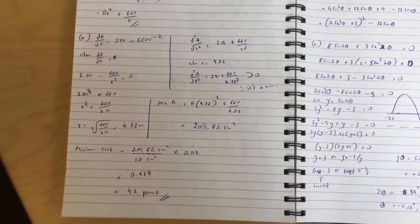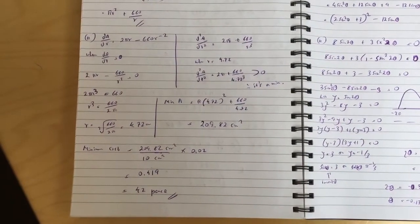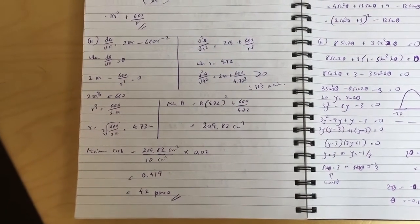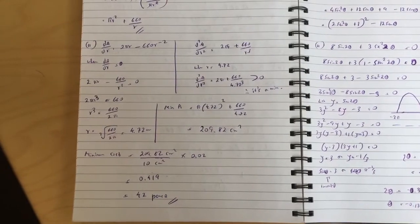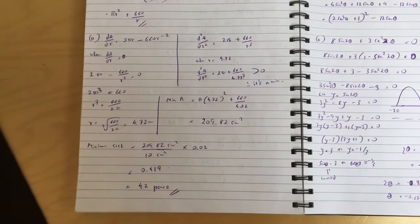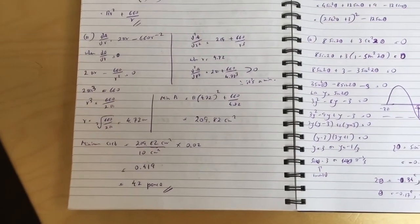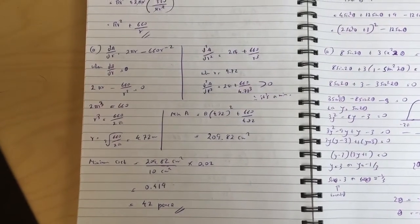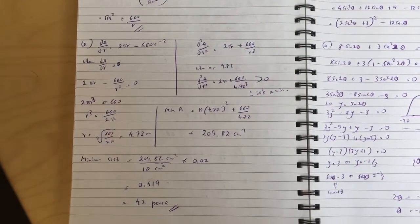You find dA/dr, you make it equal to zero, you find r, that happens to be 4.72. And then you find second derivative d²A/dr², plug in 4.72, it's greater than zero, so it's a minimum. So minimum area is the value of A when you plug in 4.72, which is 209.82. Minimum cost is that divided by 10 cm² times 0.02, which happens to be 42 pence.